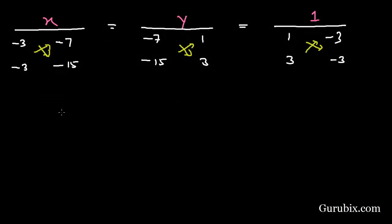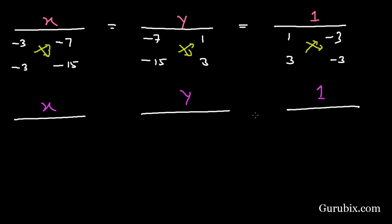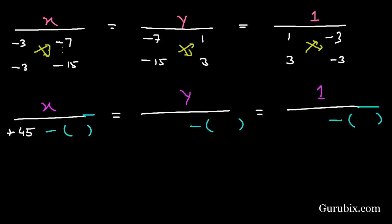Now draw the cross multiplication signs and write x, y, and 1 with signs of equality. Multiply minus 3 with minus 15 to get plus 45, then minus 7 with minus 3 to get plus 21. Multiply minus 3 with 3 to get minus 21, and 1 with minus 15 to get minus 15. Multiply minus 3 with 1 to get minus 3, and minus 3 with 3 to get minus 9.